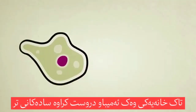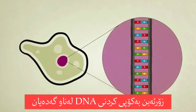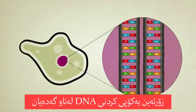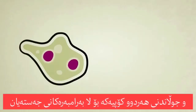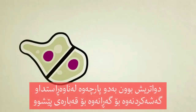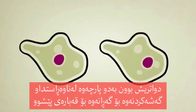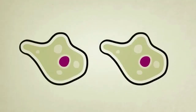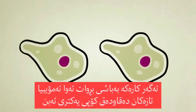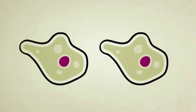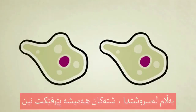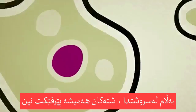Single-celled amoebas and other simple creatures reproduce by copying their DNA inside their guts, moving both copies to either side of their body, splitting in two right down the middle, and then growing back to full size. If all goes well, the two new amoebas will be exact copies of each other, but in nature things aren't always perfect.